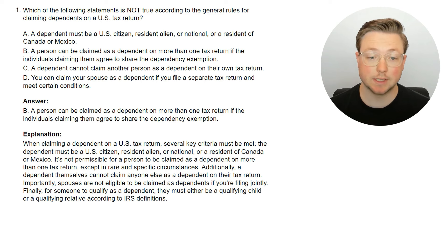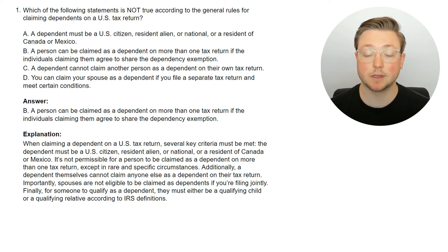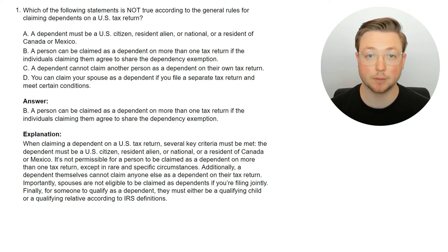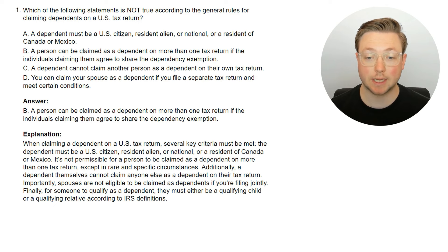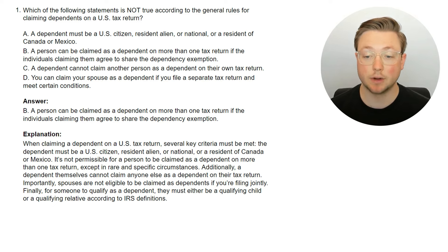The one that's not true is that a person can be claimed as a dependent on more than one tax return if the individuals claiming them agree to share the dependency exemption. So this isn't true. When claiming a dependent on a U.S. tax return, several key criteria must be met.